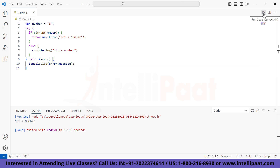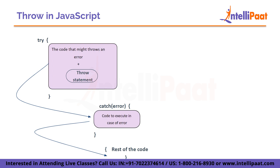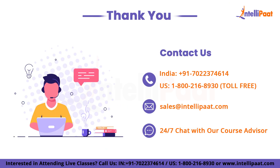In this code we are checking whether the given input is a number or not. If it is, the else statement will be executed. If it is not, the if statement is executed and the corresponding error will be thrown. We can use the throw statement anywhere inside the try block. Whatever is written inside the throw statement will be passed as an error object to the catch block. In this example, I have used throw with an if-else statement — whichever condition is satisfied, the throw statement will execute and the corresponding error object will be passed.